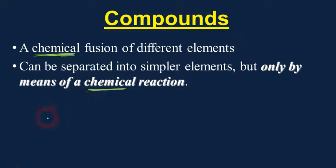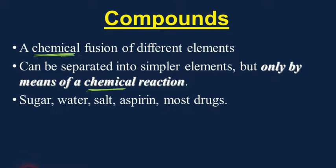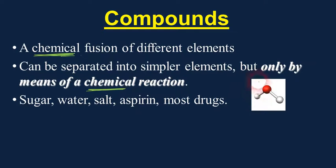For example, if we have different compounds like sugar, water, salt, or aspirin, we know that you can separate these into their component elements. Here's a visual representation of a water molecule. We know the formula for water is H2O — that means it has two atoms of hydrogen and one atom of oxygen. The red circle is oxygen, and the two white circles are each hydrogen.